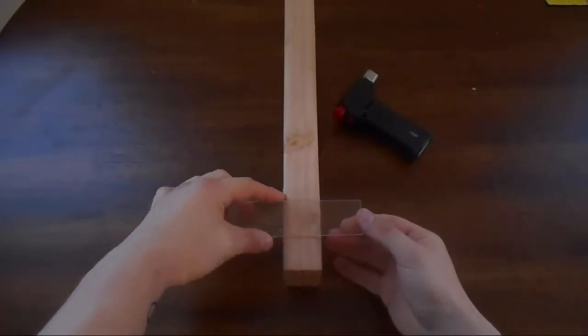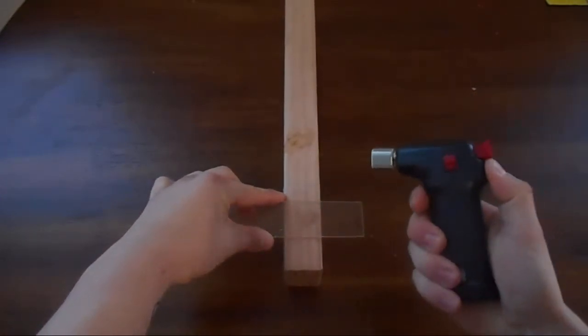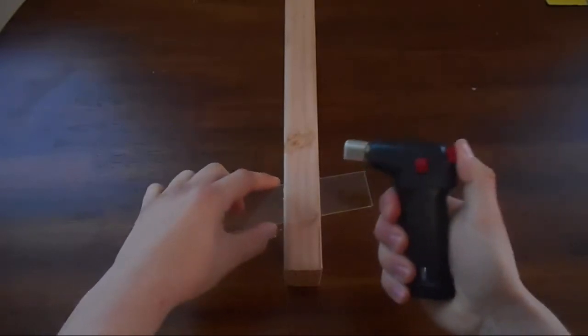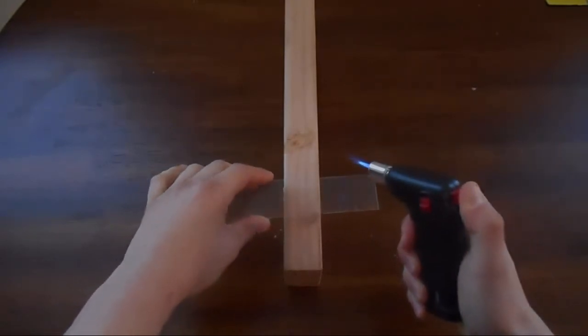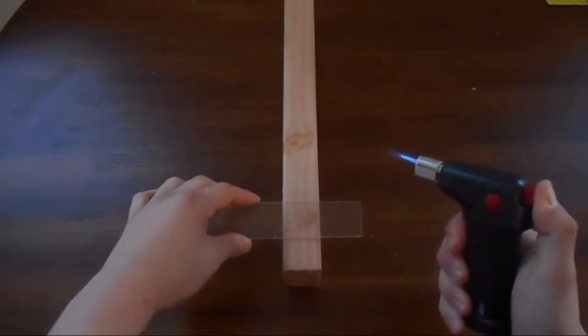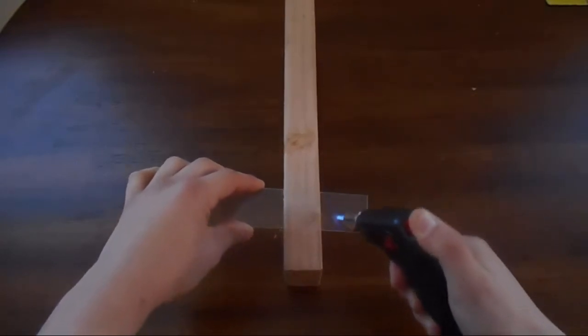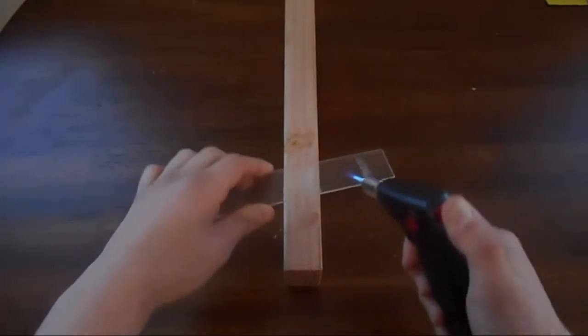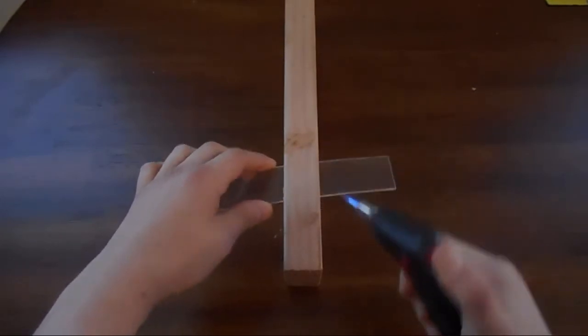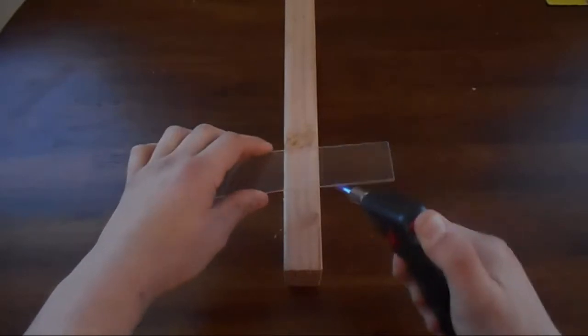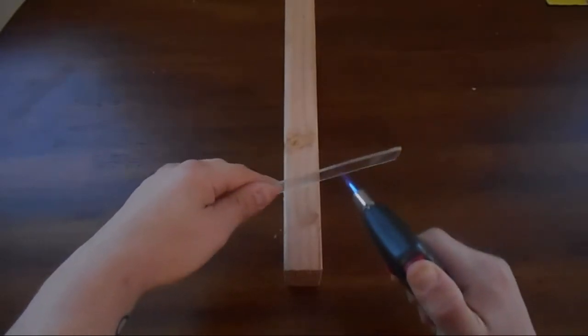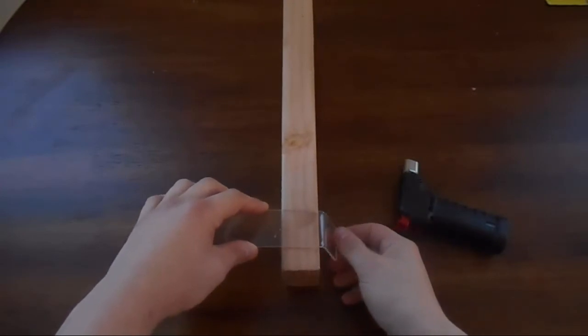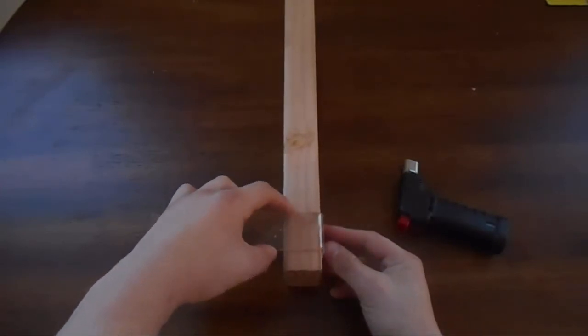So we're just going to go ahead and wing it here. It's not going to be anything special. Get our little torch here to work. So kind of going to do it here. Now you're going to want to heat one side, heat both sides. You're going to see it starting to bend a little bit.